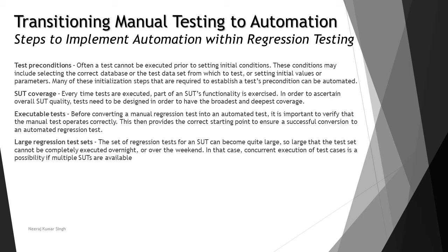SUT coverage refers to what kind of coverage your tests have — how many test cases are being exercised and executed. To ascertain overall SUT quality, tests need to be designed for the broadest and deepest coverage. While manual testing may have had lower coverage to save costs, automating gives you the opportunity to create deeper test cases and achieve better coverage, providing a provision to do what wasn't possible manually.